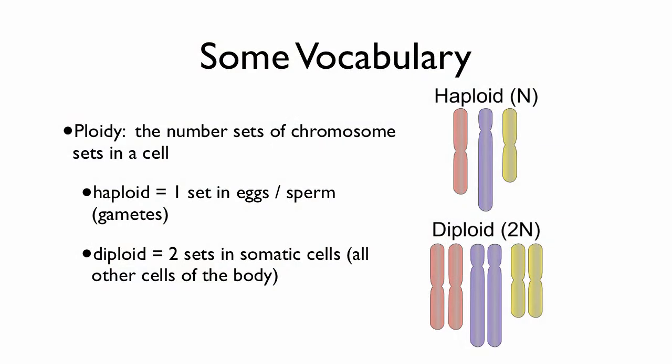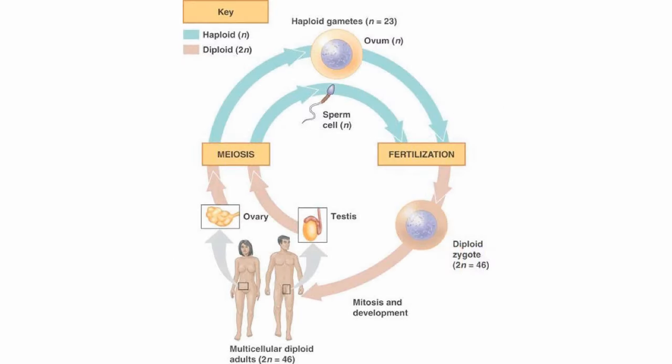The vocabulary we use to talk about chromosome sets is called ploidy. You're going to see these terms a lot. Haploid is the number of sets in sex cells — eggs or sperm — they have only one set of chromosomes. We use the letter N for haploid. Diploid is two sets, and that's what we find in all somatic cells, other cells in the body. The word soma just means body. There are other terms in plants, like tetraploidy and polyploidy, but for now we're just going to stick with haploid and diploid.